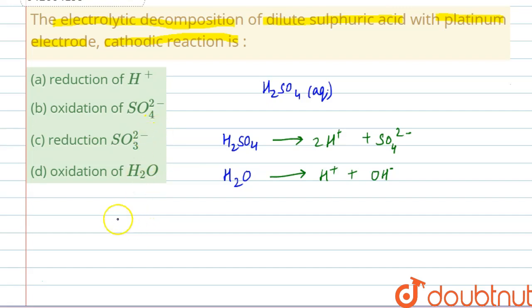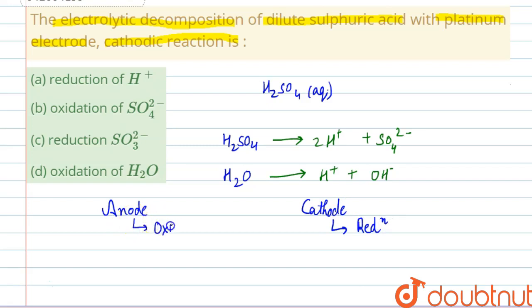In electrolytic decomposition we have two rods — anode and cathode. At the cathode, reduction takes place, whereas at the anode, oxidation takes place. The cathode is negatively charged, whereas the anode is positively charged.